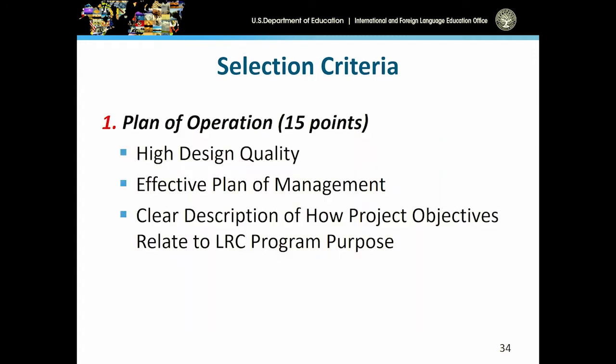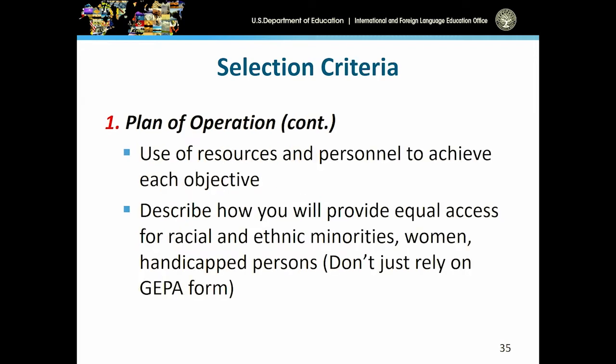Drilling down into the criteria: number one is the plan of operations, worth 15 points. We need you to include a plan of operations for each year you're requesting program funding — this is a four-year competition. Describe with as much detail as possible all the necessary steps to reach your program goals. Describe your objectives and how they relate back to Title VI and the LRC program — what you plan to do, how you will manage activities, how you'll leverage resources and personnel, and your plans for equal access to these federally funded activities.